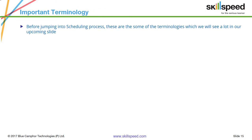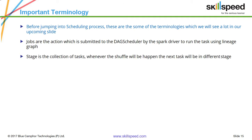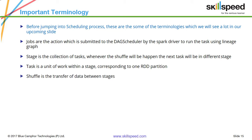Before the scheduling process, let's understand some terminology. A job is the action submitted to the DAG scheduler by the Spark driver — you can think of a job as a program. If you have written four transformations and then call an action, that is a job submitted by your driver to the DAG scheduler. A stage is a collection of tasks grouped so that tasks with no shuffle come into one stage; whenever there is a shuffle, Spark creates a different stage. A task is a unit of work within a stage corresponding to one partition. Shuffle is the movement or transfer of data between stages.